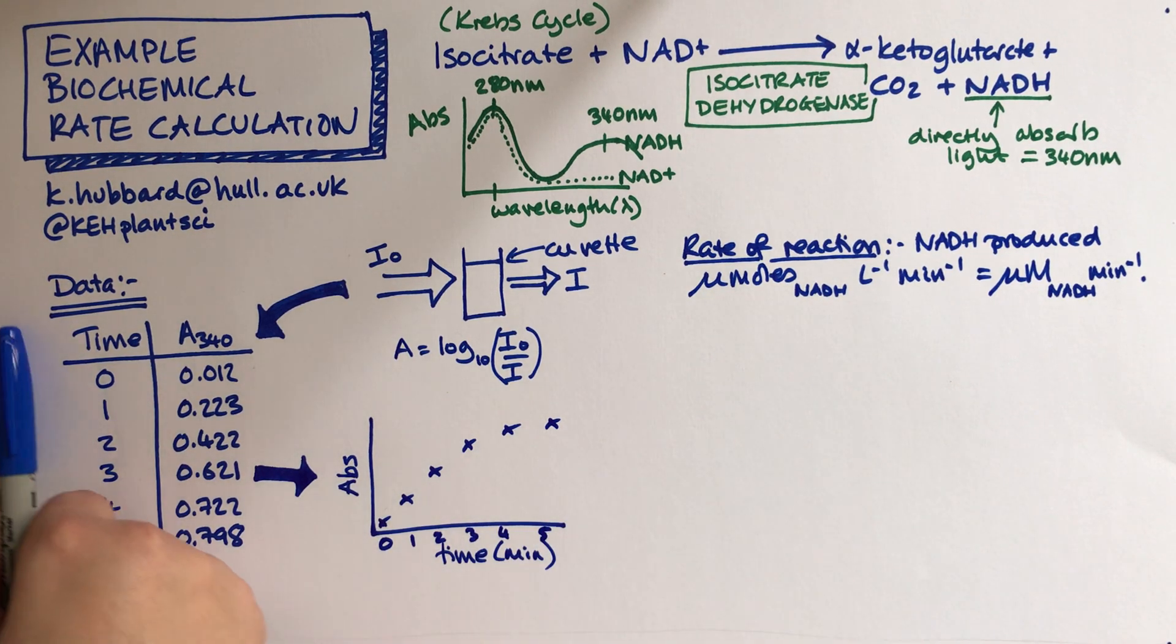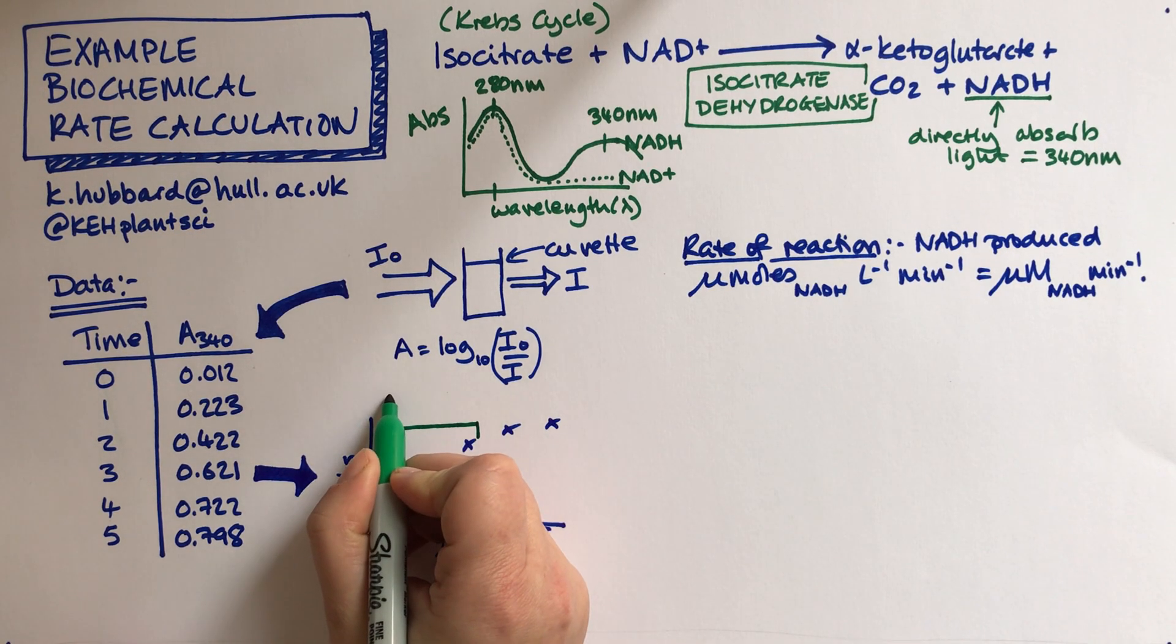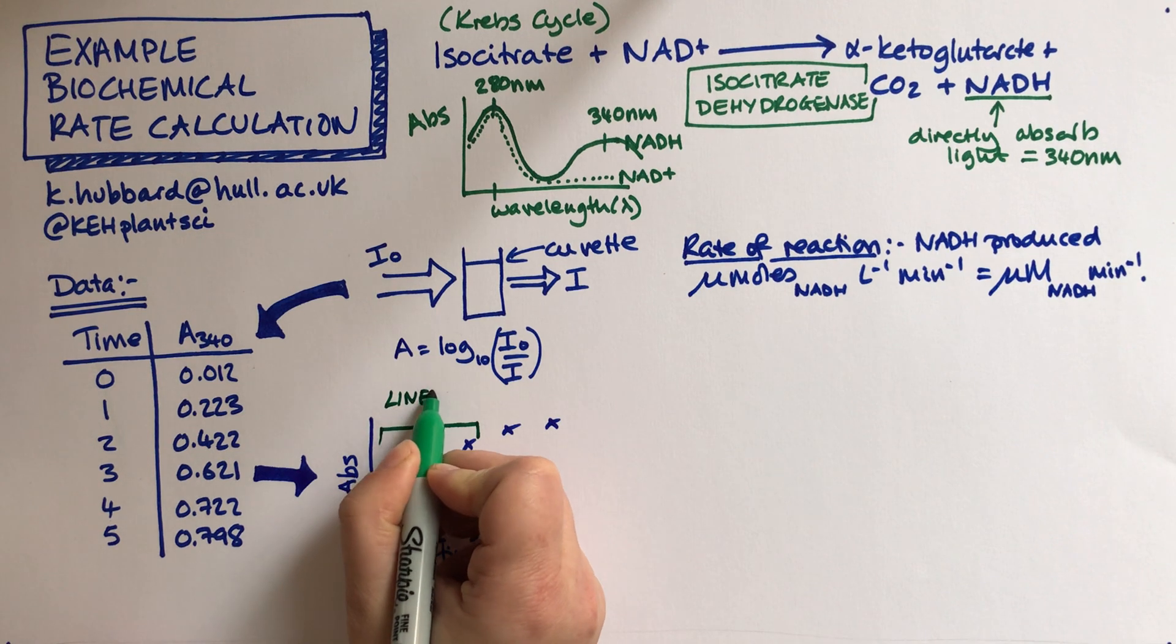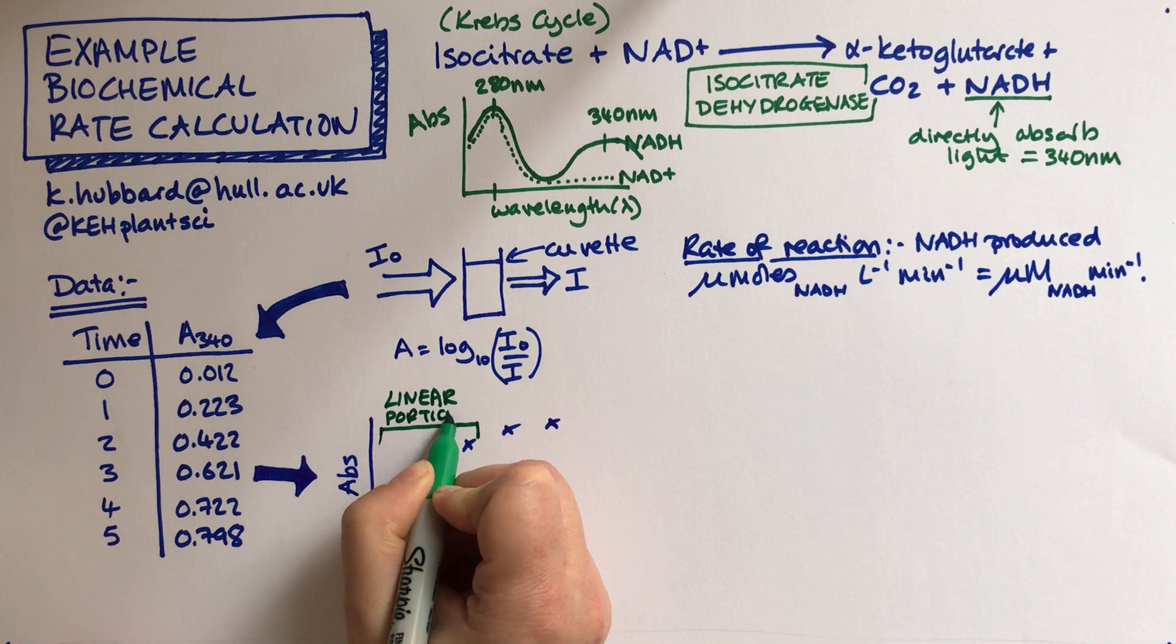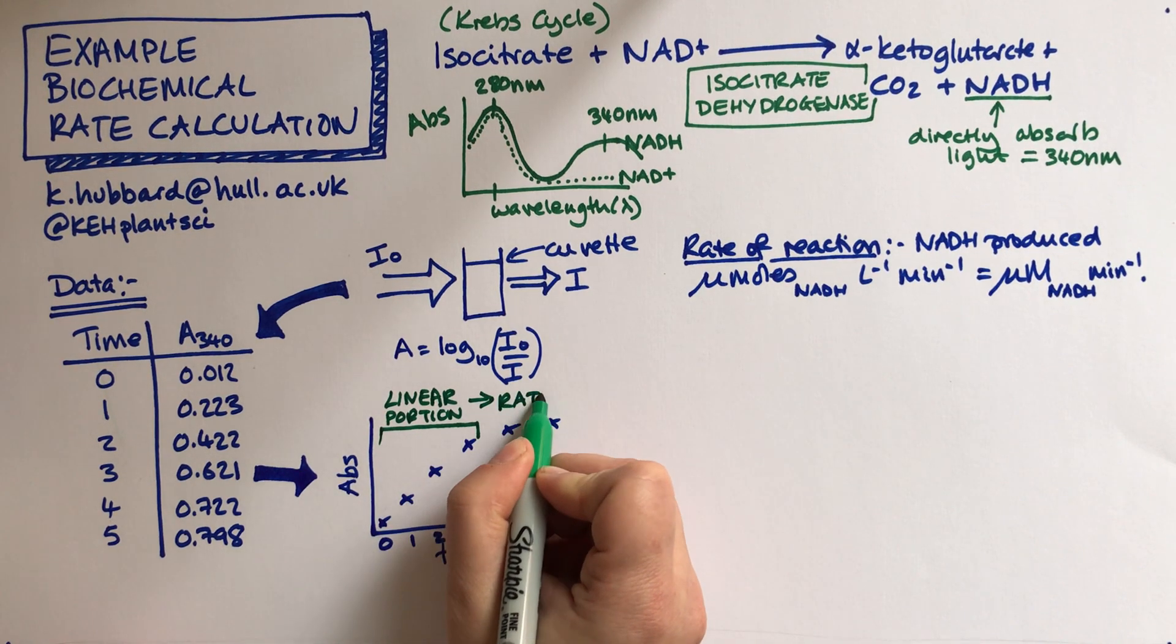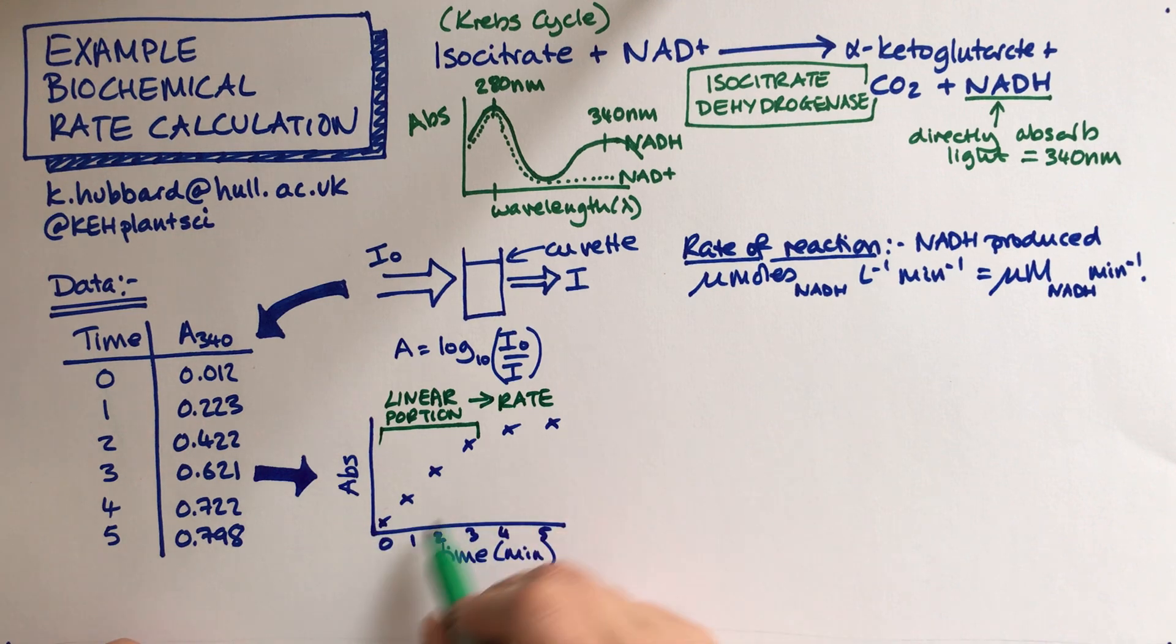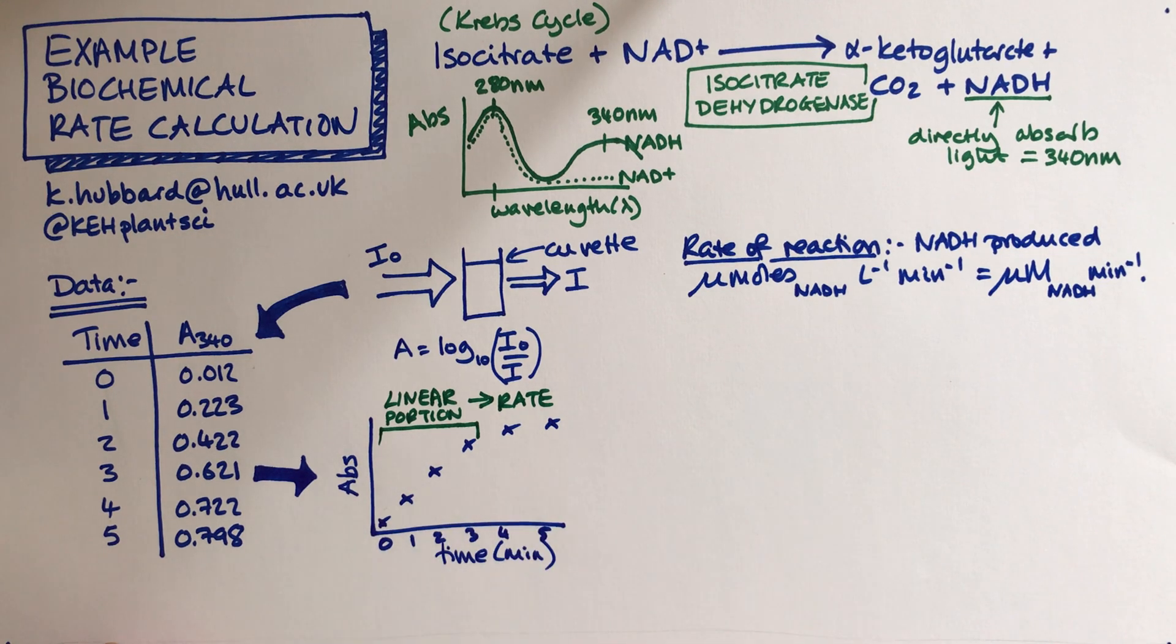So if we're going to find a rate then I would do that in the linear portion of the graph. We can use that to get a rate. If we use the whole graph we'll underestimate the rate of the enzyme because it's starting to tail off just because it's running out of substrate. But if we do it in the linear portion then that should be an accurate rate calculation.